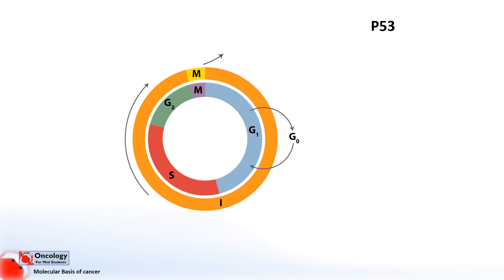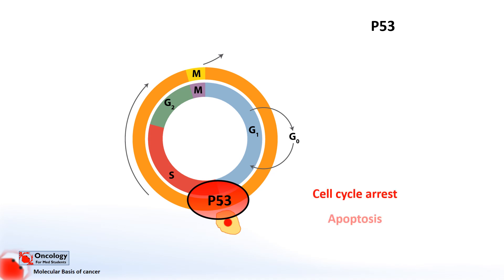No talk on tumour suppressor genes would be complete without mentioning the king of tumour suppressors: p53. Around 50% of all cancers have a mutation in their p53 gene. p53 stops tumours from developing by two key mechanisms. In response to DNA damage or stress, it activates a gene which halts the cell cycle. The other method it utilizes is the activation of apoptosis in damaged cells. Clearly, if p53 stopped functioning, the consequences for a cell would be disastrous — mutations would be passed on and cells would divide without control.